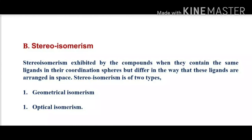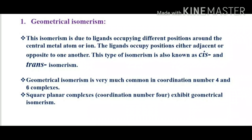The next category is stereoisomerism. Stereoisomerism is exhibited by compounds when they contain the same ligands in their coordination spheres but differ in the way those ligands are arranged in three-dimensional space. There are two types: geometrical isomerism and optical isomerism. Geometrical isomerism is also known as cis-trans isomerism, and is very common in coordination number four and six complexes. Square planar complexes commonly exhibit geometrical isomerism.